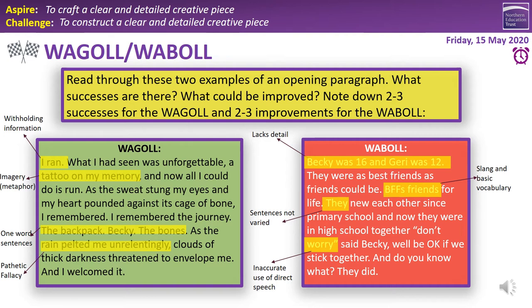'They knew each other since primary school and now they were in high school together' — again, just giving information, no varied sentences, not a good attempt. Then: 'Don't worry, said Becky, we'll be okay if we stick together' — that's inaccurate use of direct speech, not following our four rules from the retrieval sheet. It doesn't add anything to the story. And 'And you know what? They did' — really basic, not building tension or the story. Avoid all of those things.